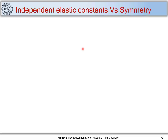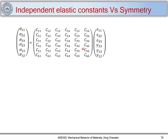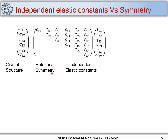In the last part we correlated stress components with strain components using a stiffness matrix or stiffness tensor which has 36 components. We saw that this stiffness matrix remains symmetric, so out of 36 components you have 21 independent components required to completely find a relation of stress to strain. Now we pose the question: how many independent elastic constants do you need when we consider the symmetry of a crystal structure?